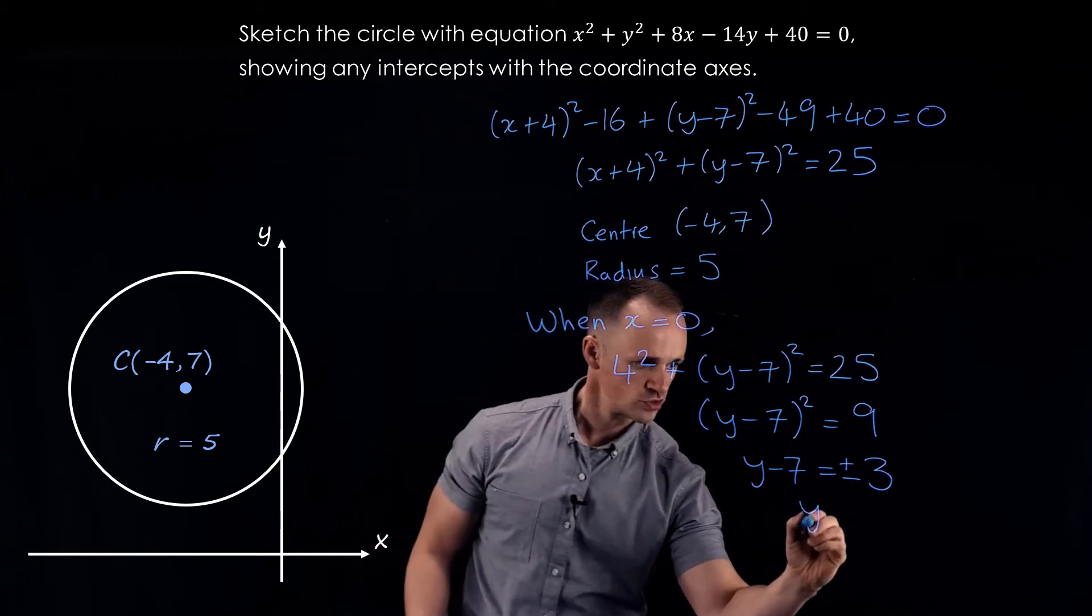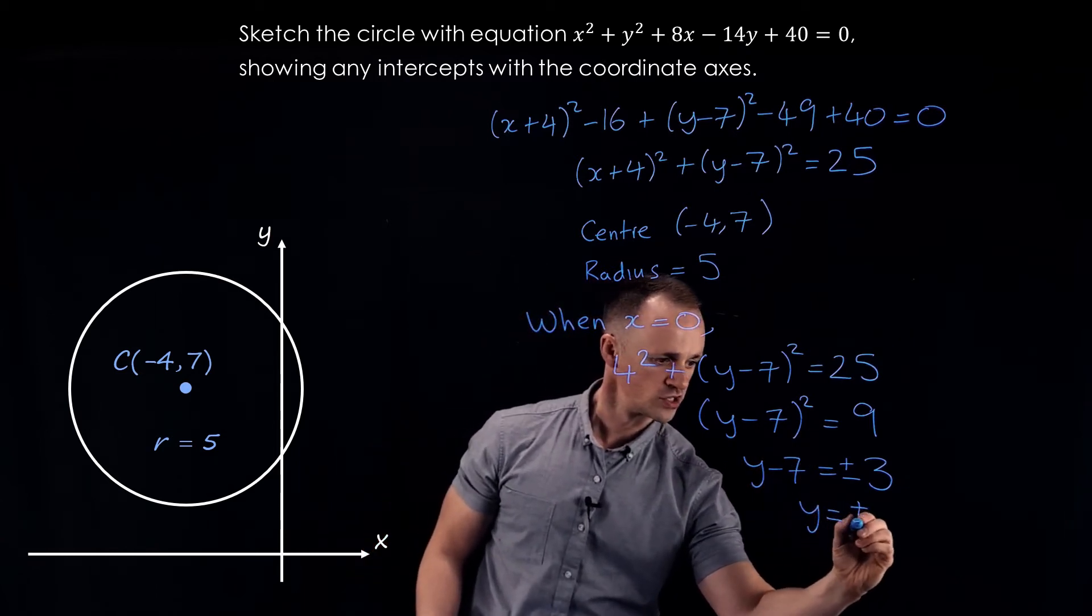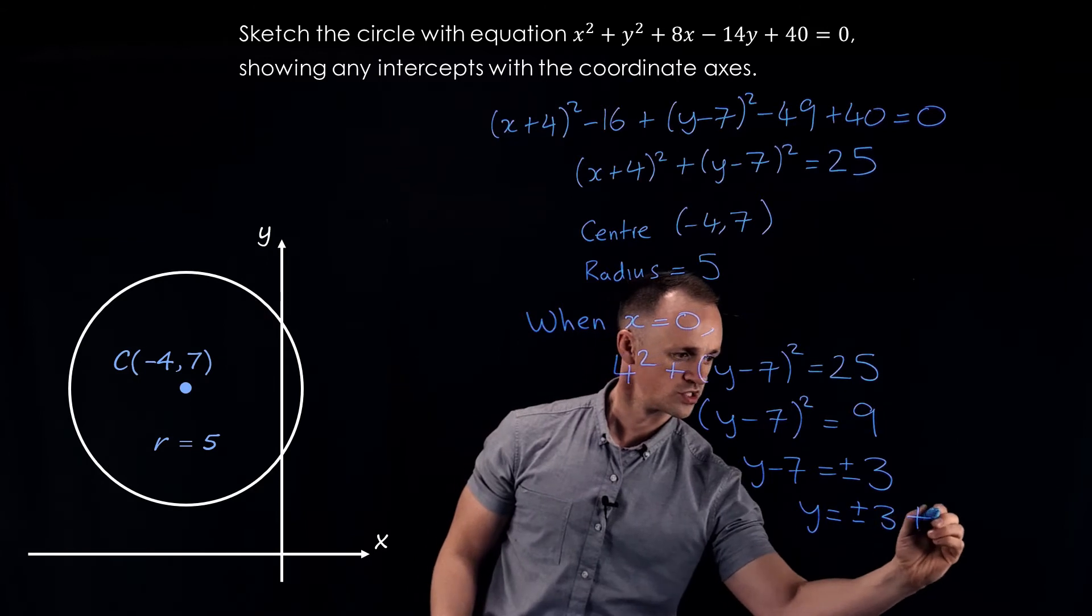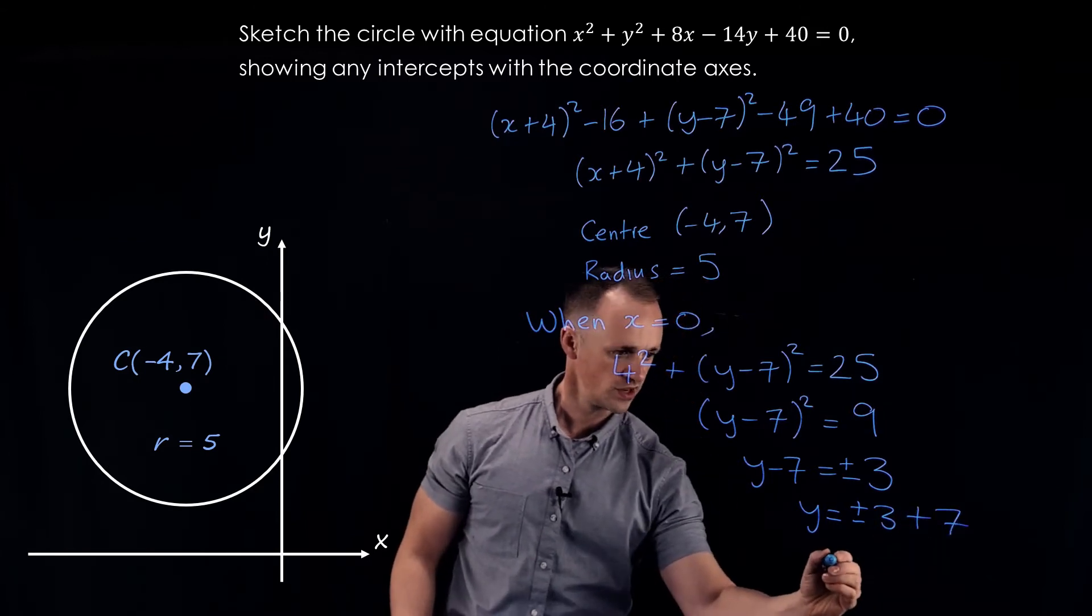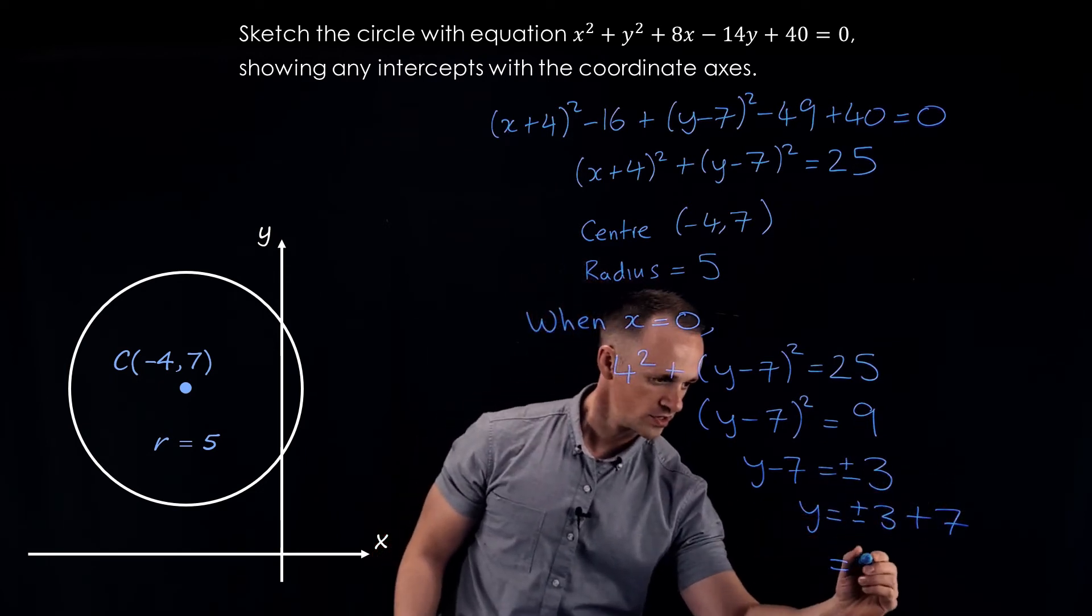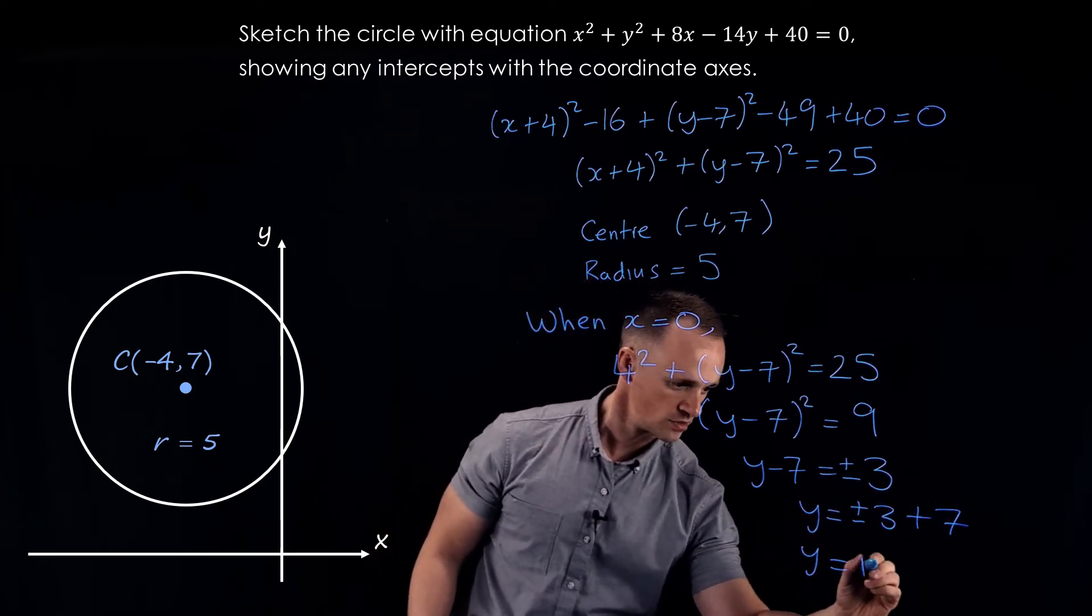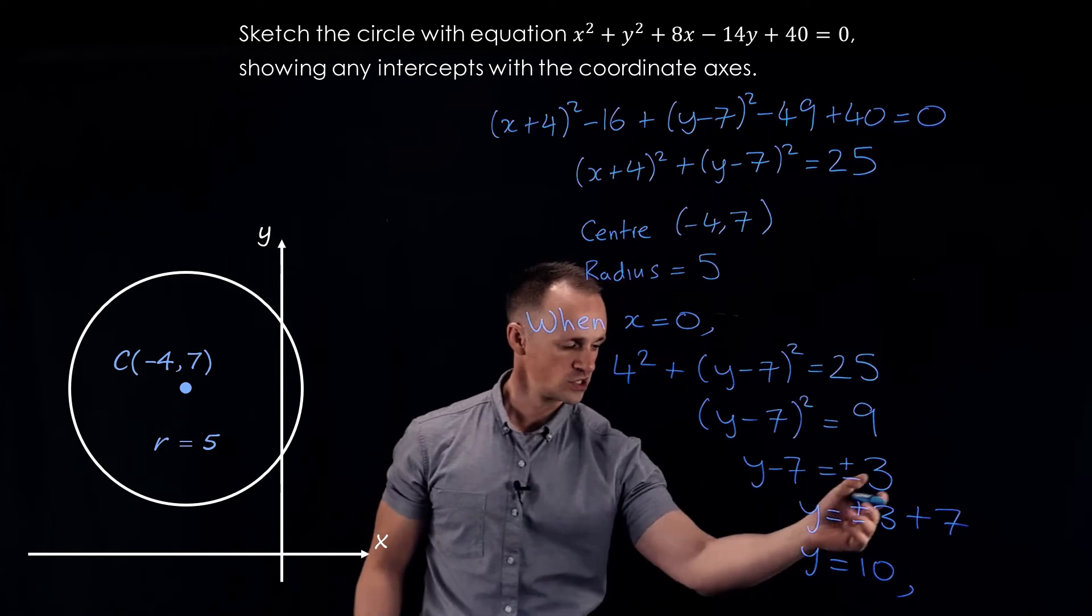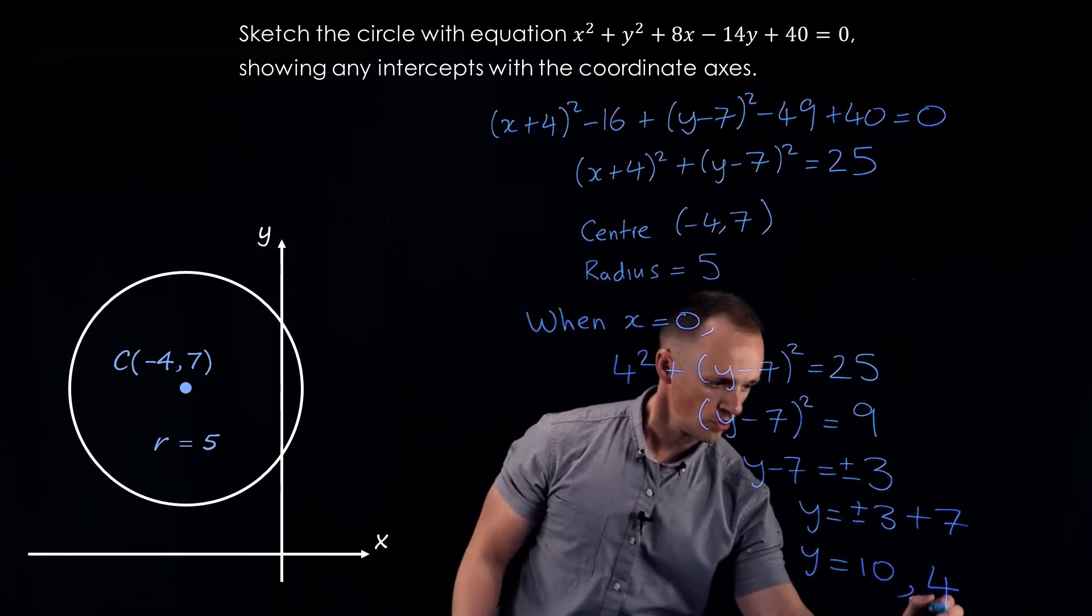So then we're going to get y equals plus or minus 3 plus 7, which gives us, if we use the plus one, we get plus 3 plus 7, which is 10. Or if we use minus 3 plus 7, we get 4.